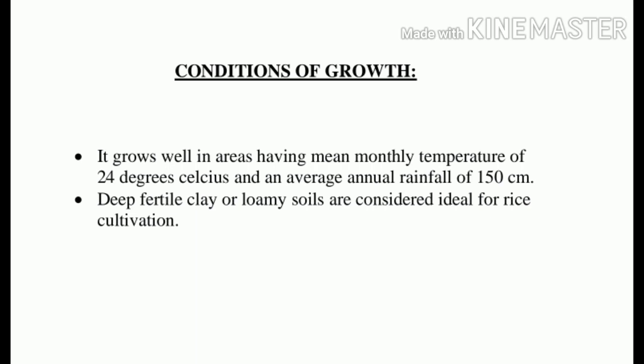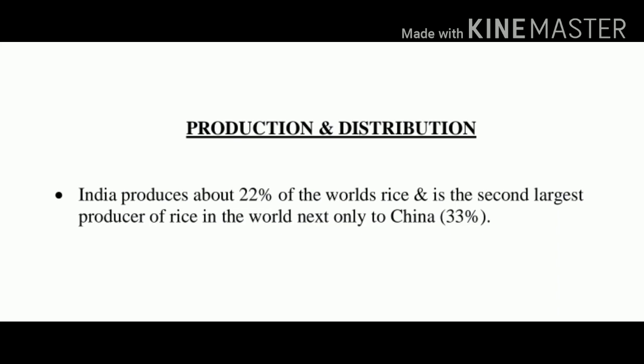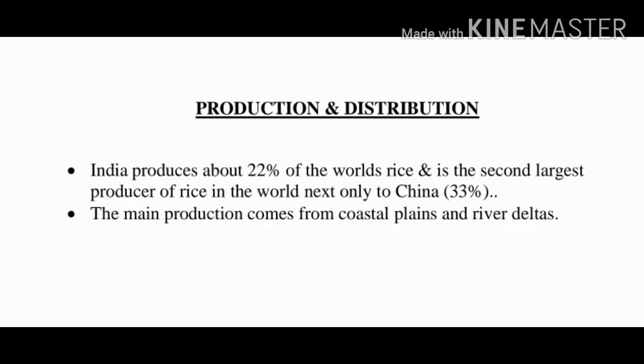Now let us talk about the production and distribution of rice. Production of rice is regularly increasing in India. India produces about 22% of the world's rice and is the second largest producer of rice in the world, next only to China with 33%. The main production comes from coastal plains and river deltas. The Satlaj-Ganga plain has emerged as an important producer of rice during recent years. This has been made possible due to large-scale use of irrigation facilities coupled with high yielding variety of seeds.